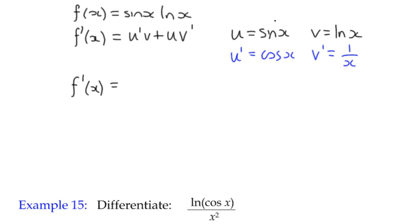The derivative is u' v, so that's cos(x) multiplied by log(x), plus u v' which is sin(x) multiplied by 1 over x. Another way of doing that is just straight away writing sin(x) divided by x.